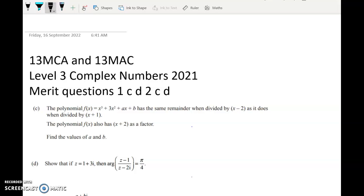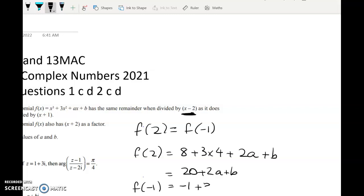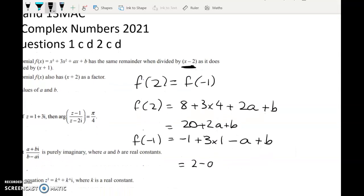So what do we know about the remainder? Well we've got f of two, when I divide by x minus two, is going to give me the same as f of negative one. So let's work out what both of those are. So f of two is going to be two cubed, eight plus three times four plus two a plus b, which is 20 plus two a plus b. And f of negative one will be negative one cubed, so negative one plus three times negative one squared, which is one minus a plus b. So cleaning that up gives me two minus a plus b.